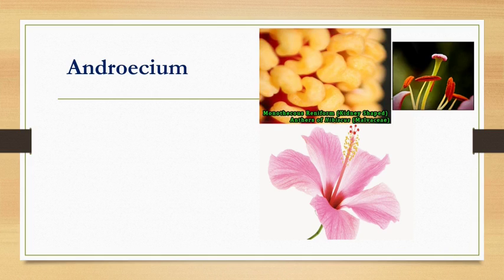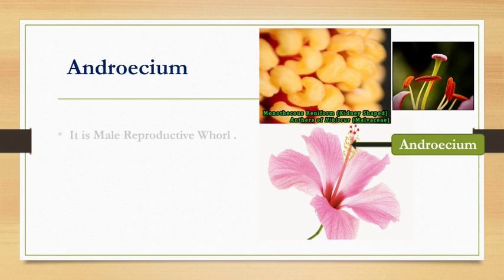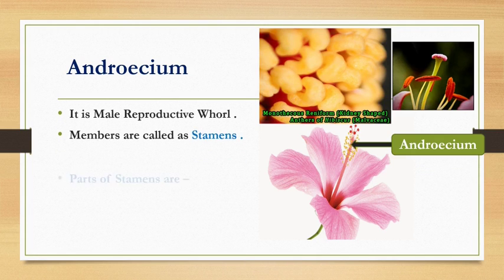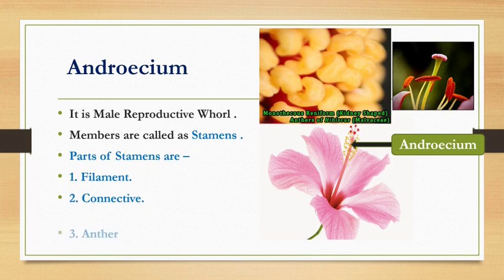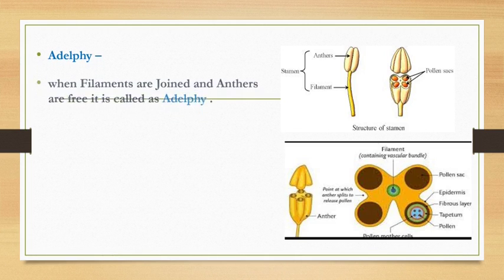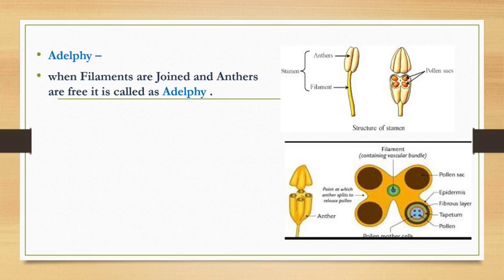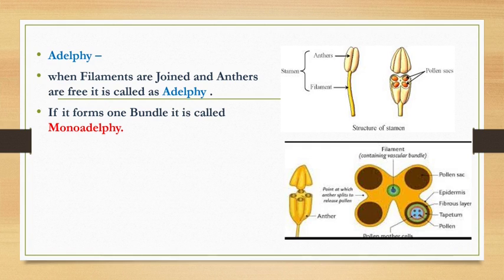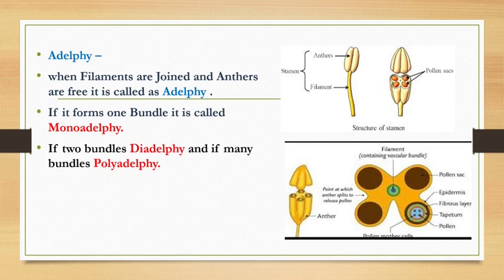Now we will start about the essential whorl. The first is the androecium — it is the male reproductive whorl. Members are called stamens. Parts of stamens are filament, connective, and anther. If the filaments are joined and anthers are free, this condition is called adelphous. If filaments join to form one bundle, the condition is called monoadelphous — seen in hibiscus. If they join to form two bundles, it is called diadelphous — seen in pea plant. If filaments join to form many bundles, it is called polyadelphous — seen in citrus flower.